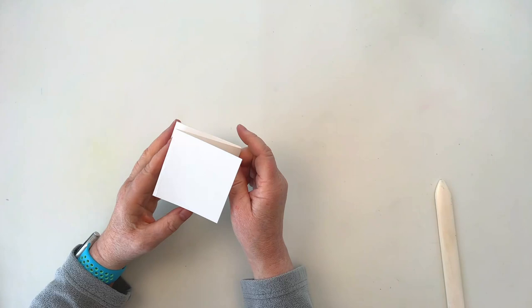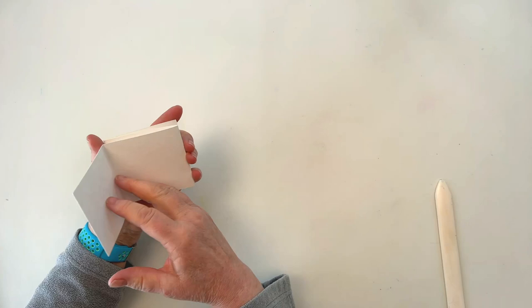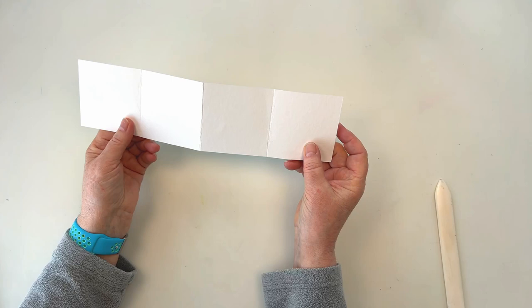And you can make as many of these as you like. And one of the nice features of this type of book is you can work on just one page like this, holding it in your hand. You can open it up and do a landscape format, or you can even have a really wide panorama.